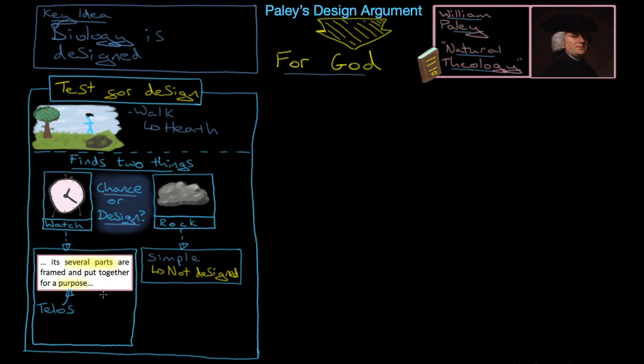Okay. It also has several parts. And this is the innovative part of Paley's test. This is new. Remember, with Aquinas, he just had purpose and unintelligent. Whereas here, Paley has something else: several parts that are all working together for that purpose. In other words, complexity.